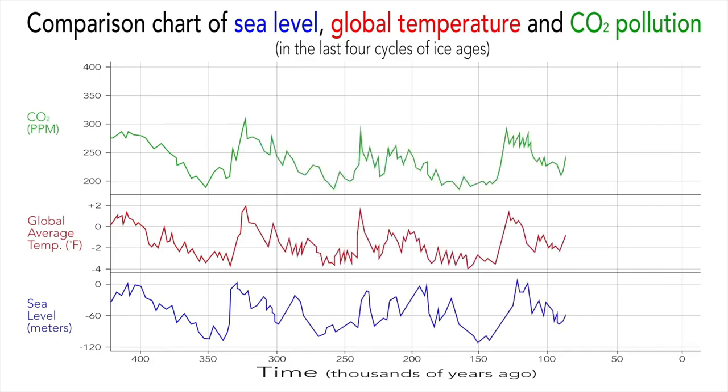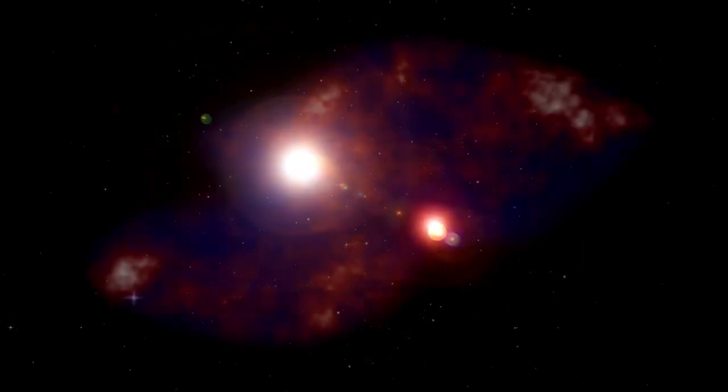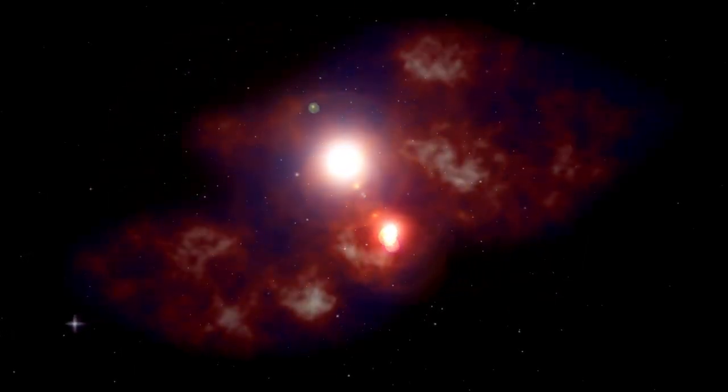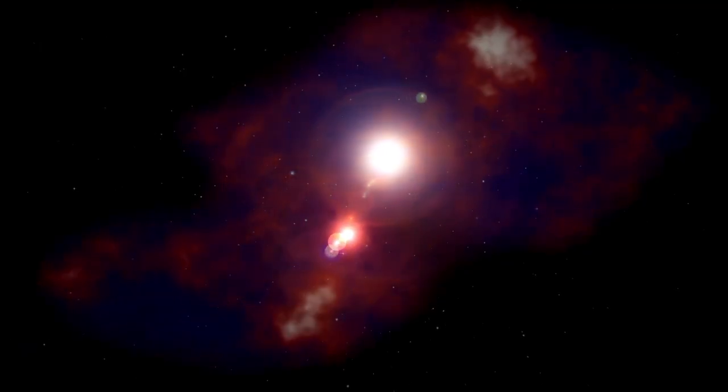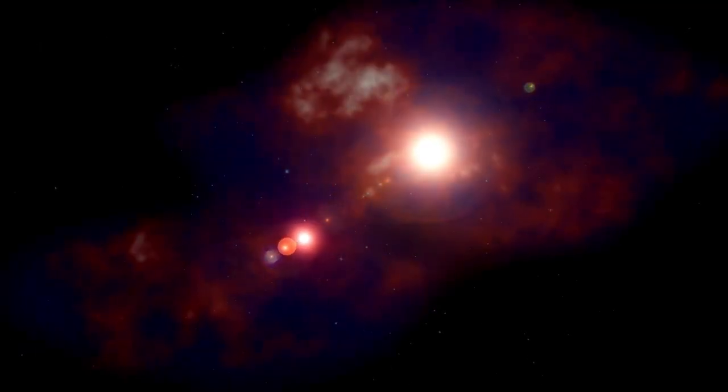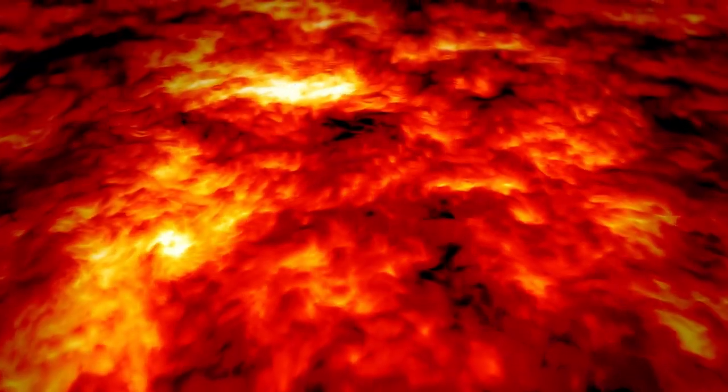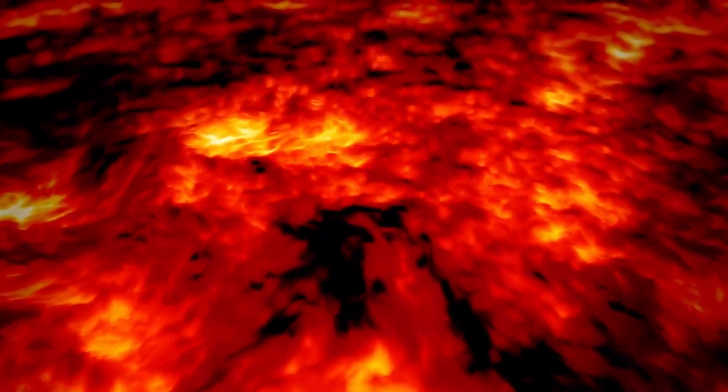The unique thing about Betelgeuse is that we can actually see its surface, which isn't the case for most other stars. This gives us an incredible opportunity to learn about how big stars like Betelgeuse behave as they get older, including these kinds of surprising mass ejection events.